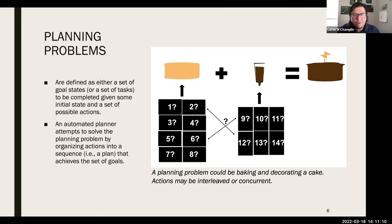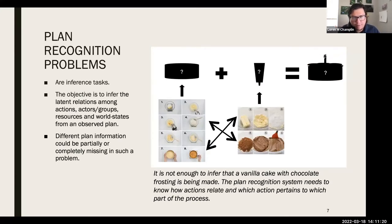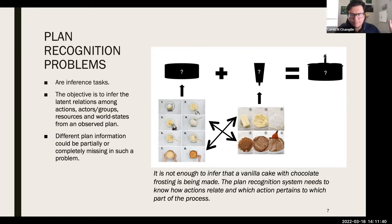Plan recognition problems are often formulated as inverses to planning problems. A plan recognition problem is an inference task where the objective is to infer the plan relations among actions, agents, groups, resources, and world states from an observed plan. Whereas in a planning problem I'm creating a plan, in a plan recognition problem I'm given a plan and trying to infer knowledge about the planning process from it. Some planning information could be partially or completely missing.